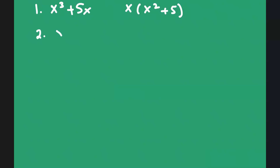Number 2, we have x to the third power plus x squared minus 6x. Once again, you would factor an x out, and you're left with x squared plus x minus 6.